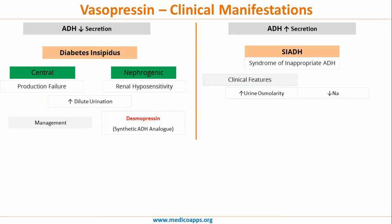In cases of SIADH, the clinical features include increased urine osmolarity and decreased sodium. Because ADH increases, the body retains all the fluid, so whatever urine output there is will be highly osmolar. There will also be water intoxication in SIADH, and clinically the patient will be euvolemic.